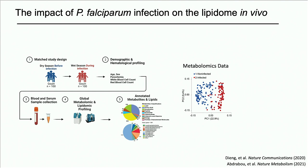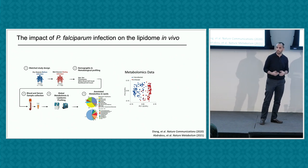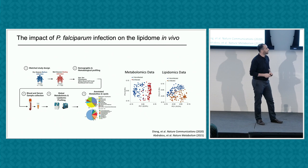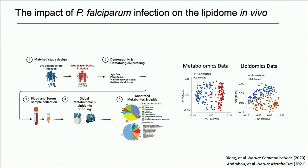This PCA shows the metabolomics data by infection status. In blue, each dot represents the metabolome of one child before infection. In red, it represents the metabolomes of these children during infection. There is a clear segregation and separation, telling us there are significant changes happening in the metabolome. Looking at the lipidomic data, you can see the same segregation — the lipidomes cluster together before infection, clearly distinct compared to their lipidomes during infection.